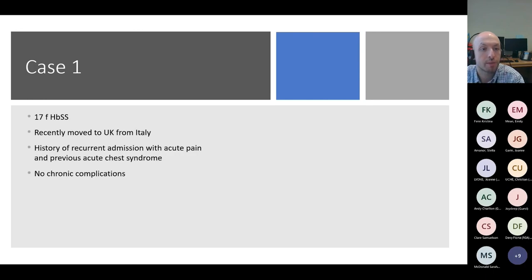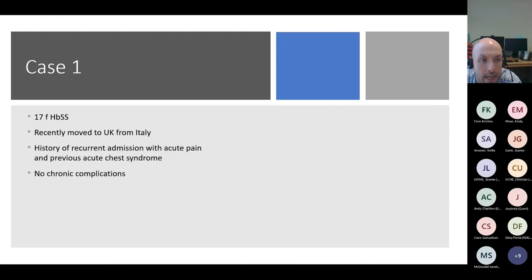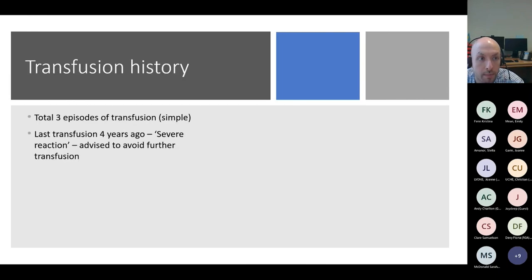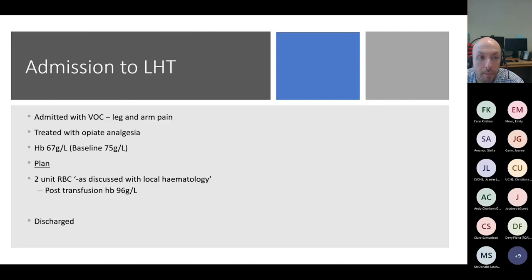Case one: a 17-year-old female with hemoglobin SS who had recently moved to the UK from Italy. She had a history of recurrent admissions with acute pain and previous chest syndrome, but no end-organ damage. Her transfusion history included three previous simple top-up transfusions. She described that her last transfusion four years ago resulted in a severe reaction and she was advised to avoid further transfusion. She was admitted to a local hospital with a vaso-occlusive crisis with leg and arm pain and treated with opiate analgesia.